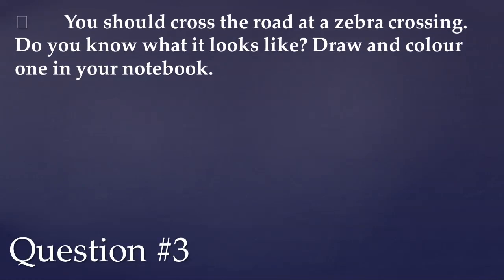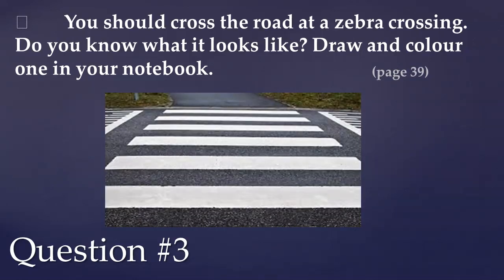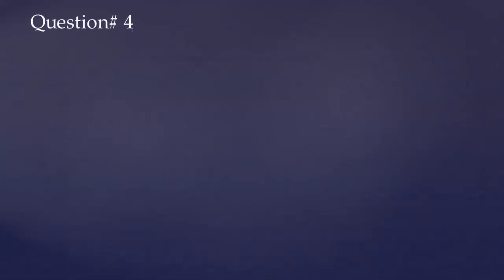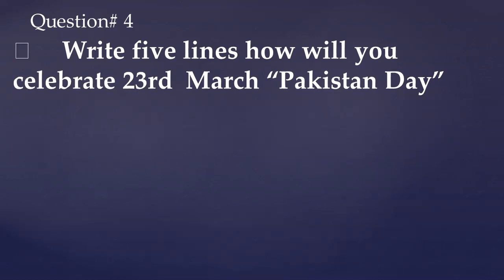Question number 3: you should cross the road at a zebra crossing. Do you know what it looks like? Draw and color one in your notebook. When we cross the road, we cross at the zebra crossing — there are lines marked on it. On page 39 there is a picture of a zebra crossing. Draw it in your notebook. Always cross at a zebra crossing, and if there isn't one, look right and left before crossing.